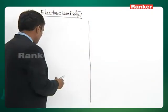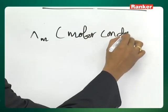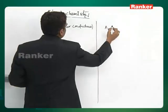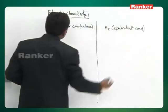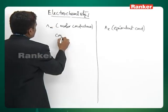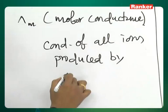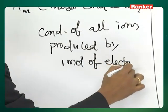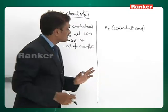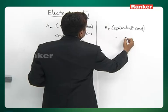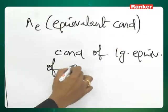To understand the effect of concentration, we need to understand molar conductance and equivalent conductance. There is no huge difference between these two terms. Molar conductance, represented by λM, is the conductance of all ions produced by one mole of electrolyte. Equivalent conductance, represented by λE, is the conductance of one gram equivalent of the electrolyte.